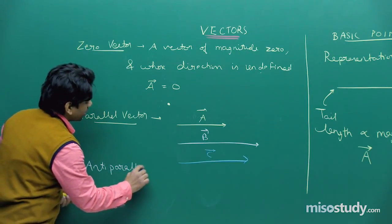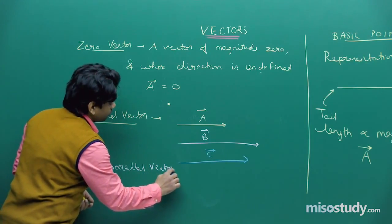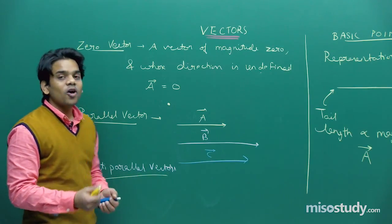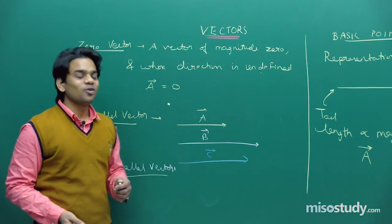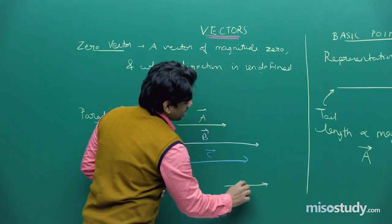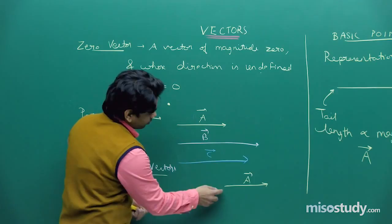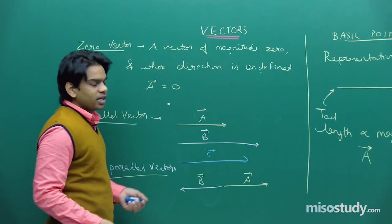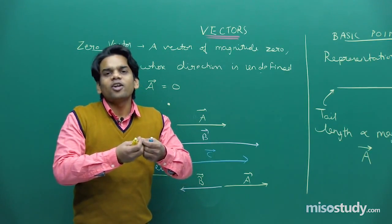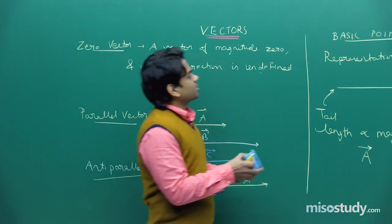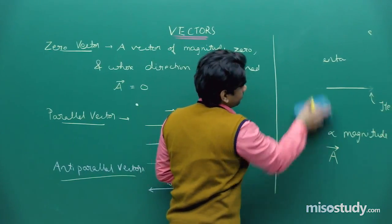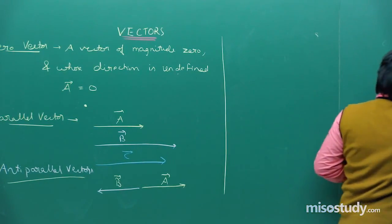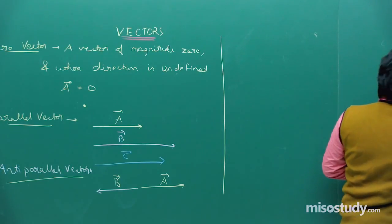Anti-parallel vectors, also called opposite vectors, are vectors directed along two opposite directions. For example, if vector A points one way and vector B points in the opposite direction, then A and B are anti-parallel vectors.